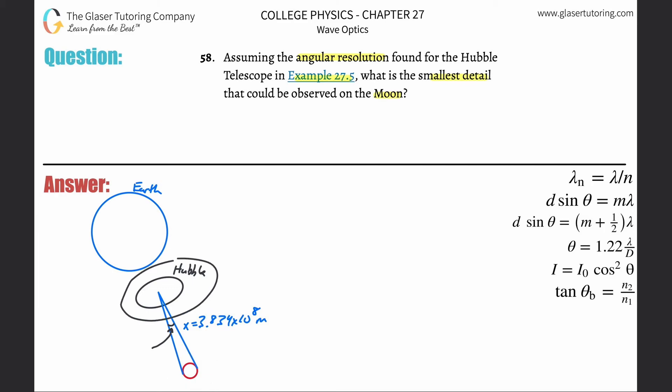So the moon is over here, Hubble telescope is here, and the Hubble telescope is somewhere above the surface of the earth. This particular angle here is, as explained in that example, 2.8 times 10 to the minus seventh radians.